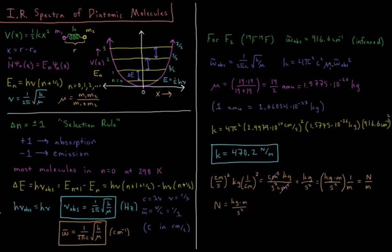Now I need to compute what mu is for my fluorine atom. In atomic mass units, that's M1, M2 over M1 plus M2, that's 19 times 19 over 19 plus 19, or 19 over 2 AMUs. 1 AMU is equal to 1.66054 times 10 to the minus 27 kilograms. So 9.5 AMUs is 1.5775 times 10 to the minus 26 kilograms.